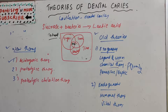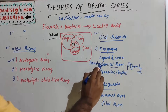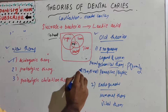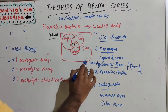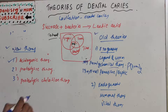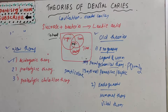The next theory was the parasitic or septic theory, given by Erdl in 1843. He explained that there is a presence of filamentous parasites in plaque, which he termed Denticola. This Denticola is responsible for dental caries. That was the parasitic theory.